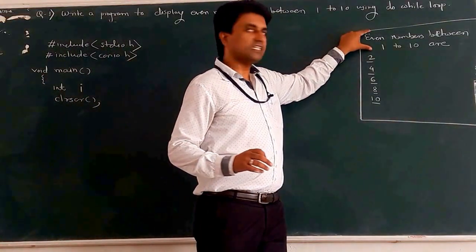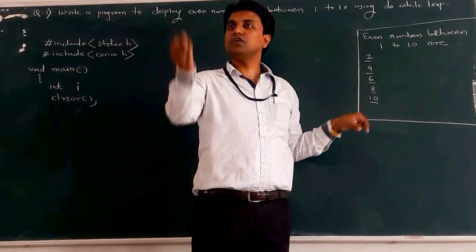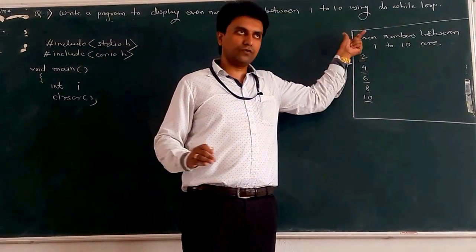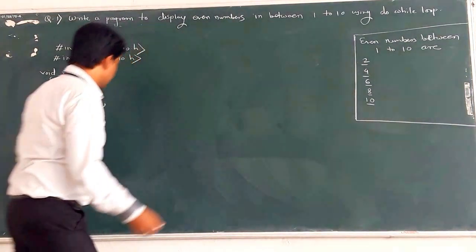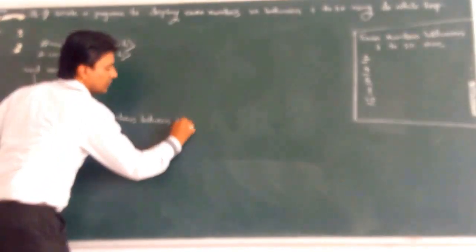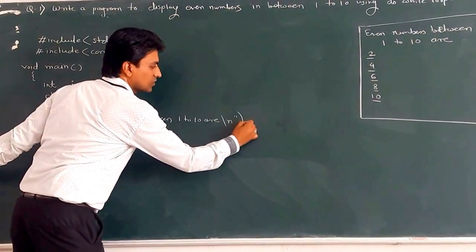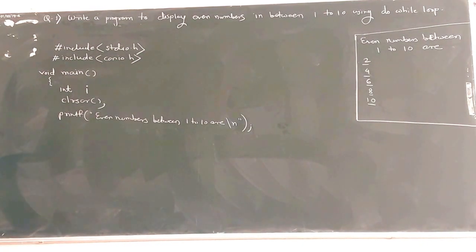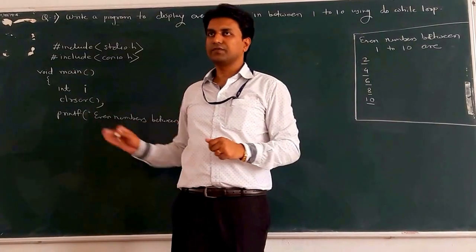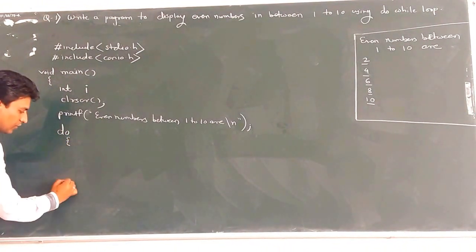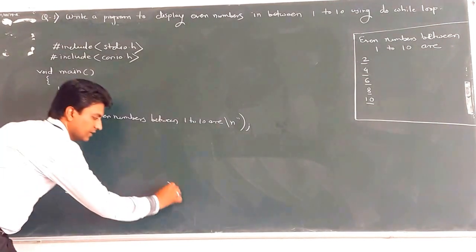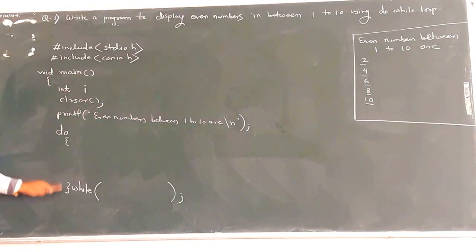After clearing the screen, we have a message that is displayed only once. This message should be placed above the do-while loop, because if we write it inside the loop, it will be printed multiple times. So we write: printf("Even numbers between 1 to 10 are:\n"); Now, for displaying even numbers between 1 to 10, we use a do-while loop. The syntax is: do { body of do-while loop } while(condition);